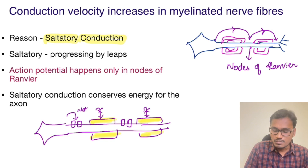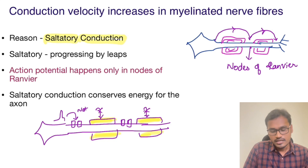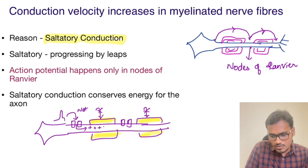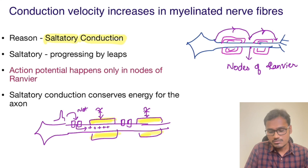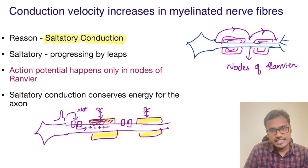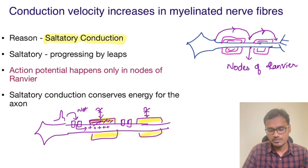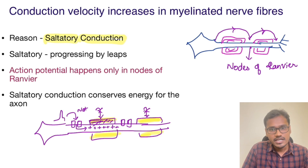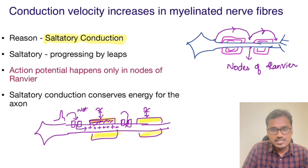Once the ions enter, there will be an axoplasmic transport of ions, but there will be no action potential in the myelinated region. Inside, there is axoplasmic transport of ions — it's not like the ions are jumping directly. Whenever it reaches the next node of Ranvier, it will open the sodium channels and the second action potential will be produced at that node.